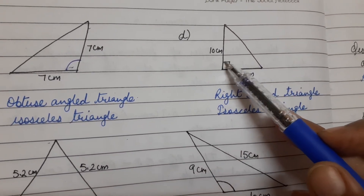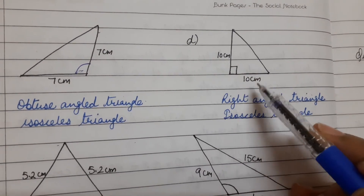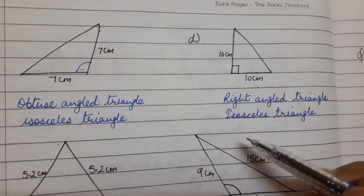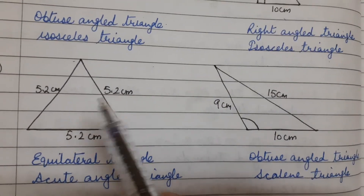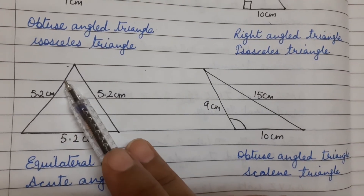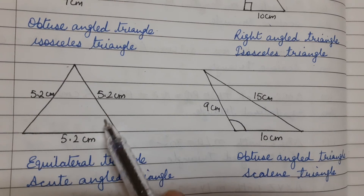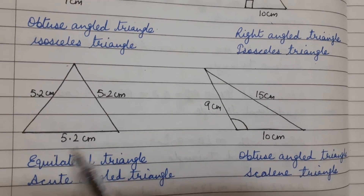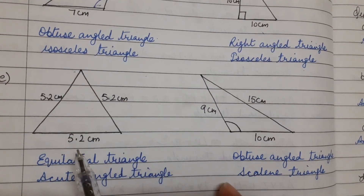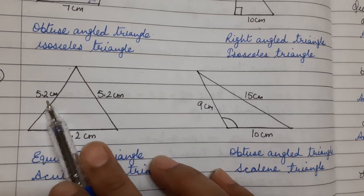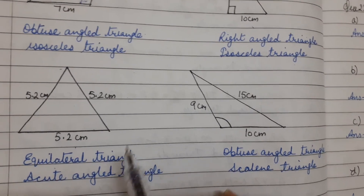For part D, one angle is 90 degrees — right angled triangle — and two sides are equal — isosceles triangle. For part E, all three angles are acute, less than 90 — acute angled triangle — and all three sides are of equal length — equilateral triangle.